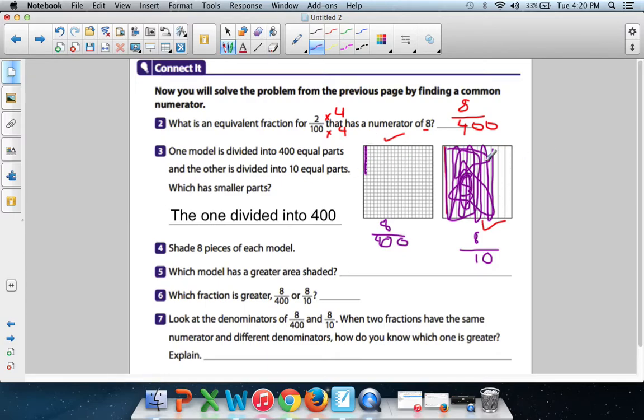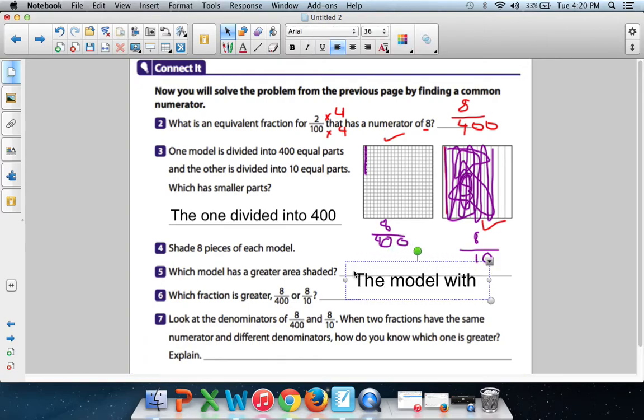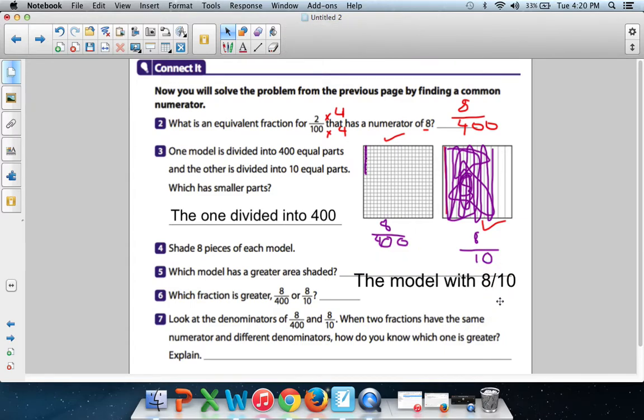Which one has more shading? Well, that one has that much. And that one has all of that. So even though 8 tenths, you might not think it's bigger, it actually has more shading. So the model with 8 out of 10. That's the one that has the greater area shaded.